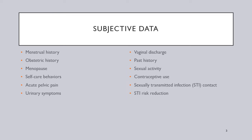When taking your health history, subjective data that should be collected includes the patient's menstrual history: the age at menarche, which was the onset of menses, what their usual menstrual cycle is like, whether or not they've hit menopause, and their last menstrual period. Also collect obstetric history: number of pregnancies, number of live births, number of miscarriages or abortions, and any complications during any pregnancies.